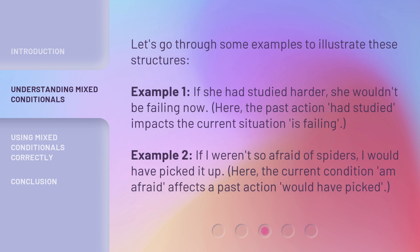Let's go through some examples to illustrate these structures. Example one: 'If she had studied harder, she wouldn't be failing now.' Here, the past action — 'had studied' — impacts the current situation — 'is failing.' Example two: 'If I weren't so afraid of spiders, I would have picked it up.' Here, the current condition — 'I'm afraid' — affects a past action — 'would have picked.'